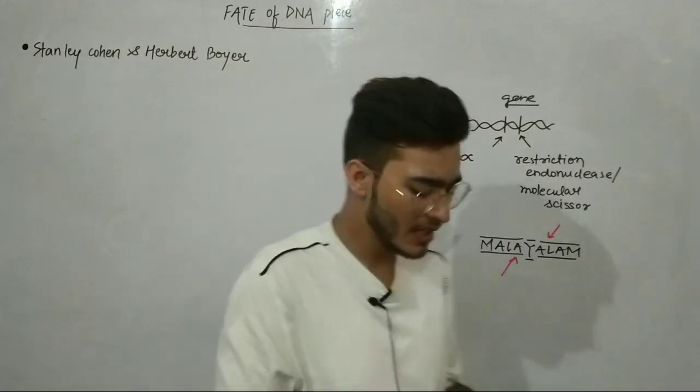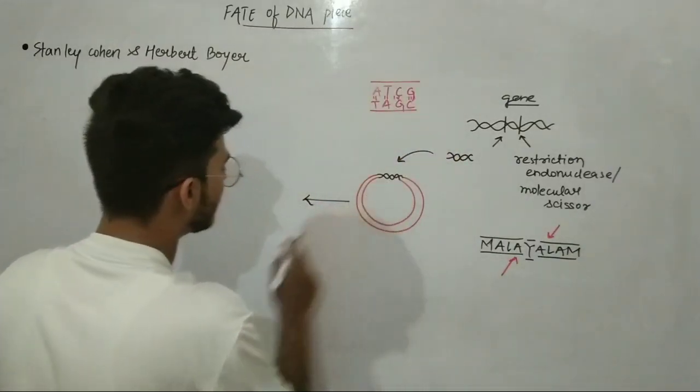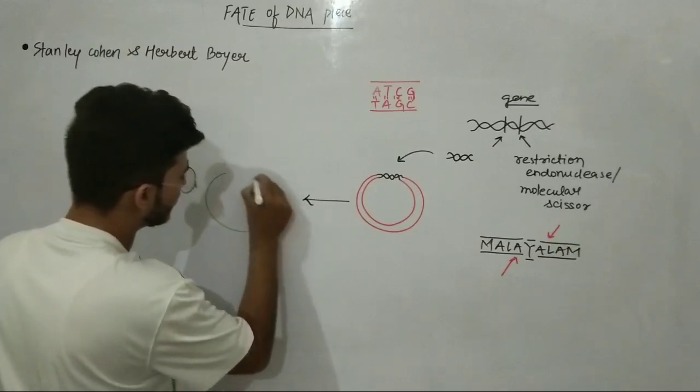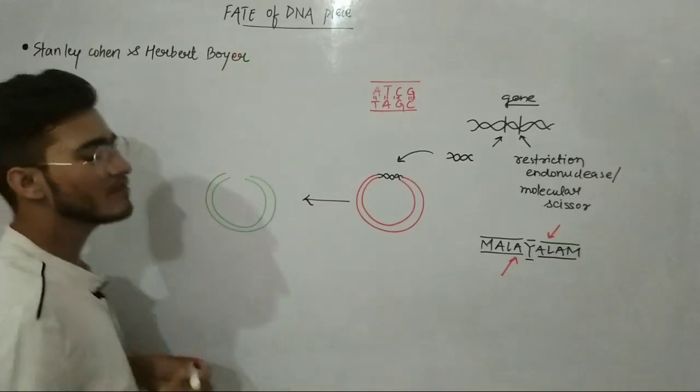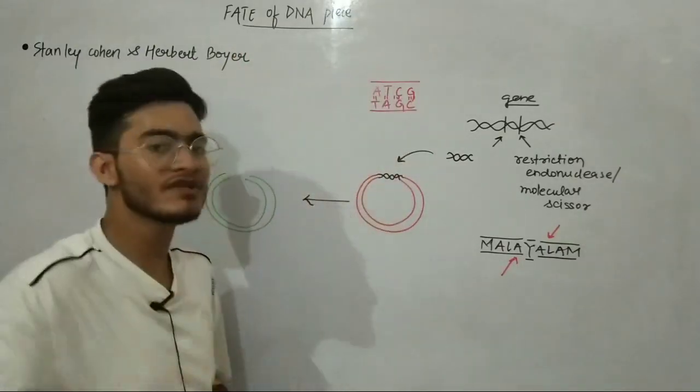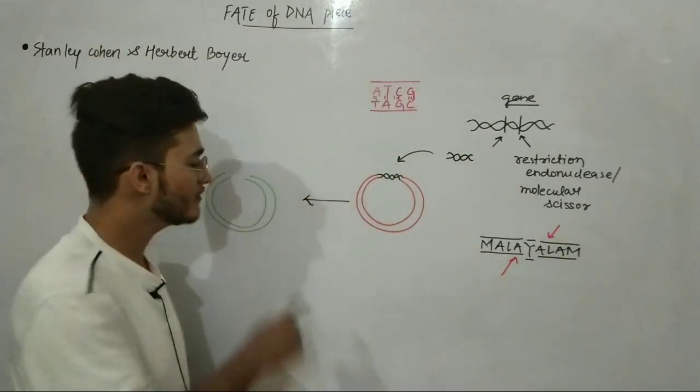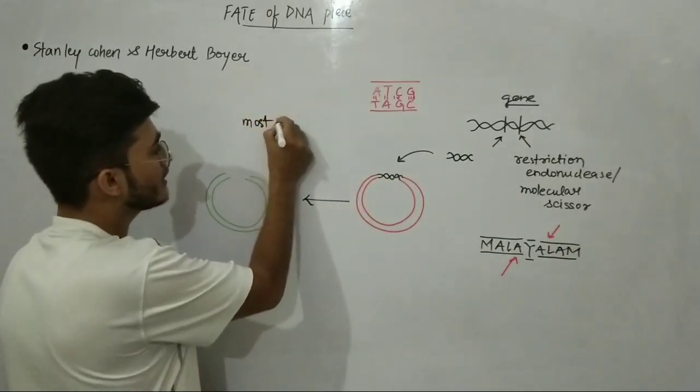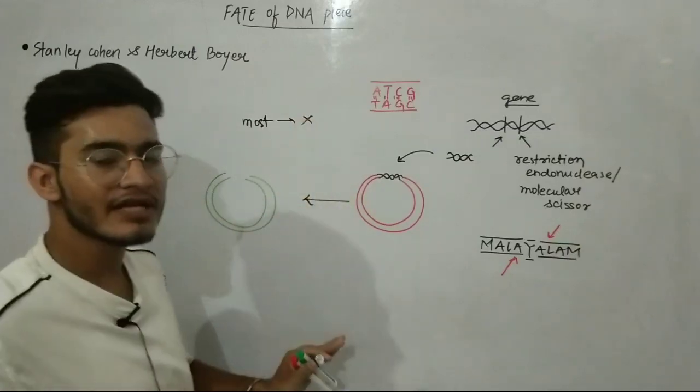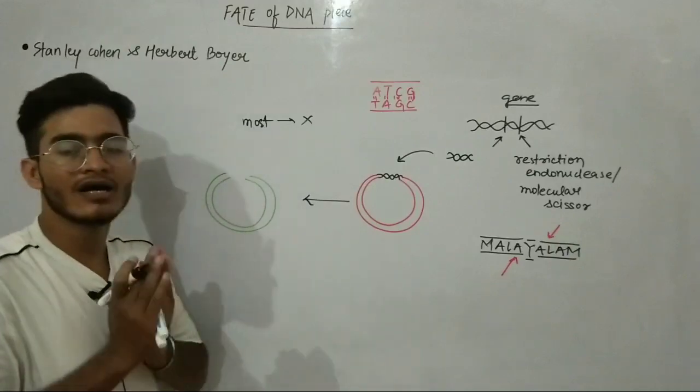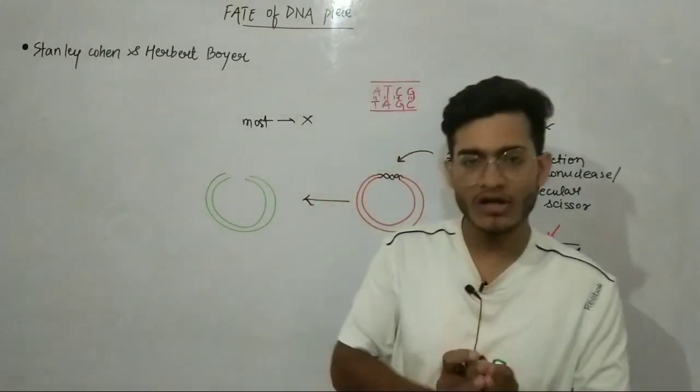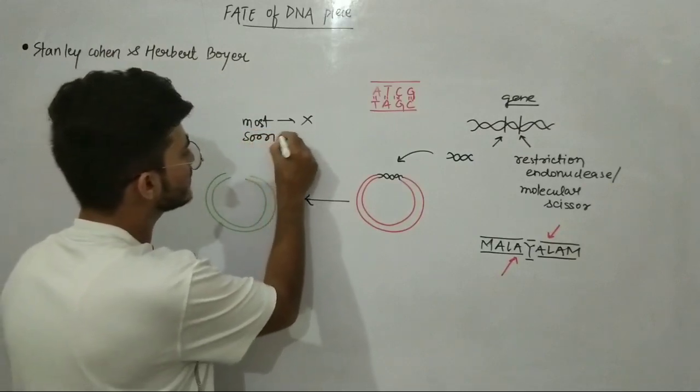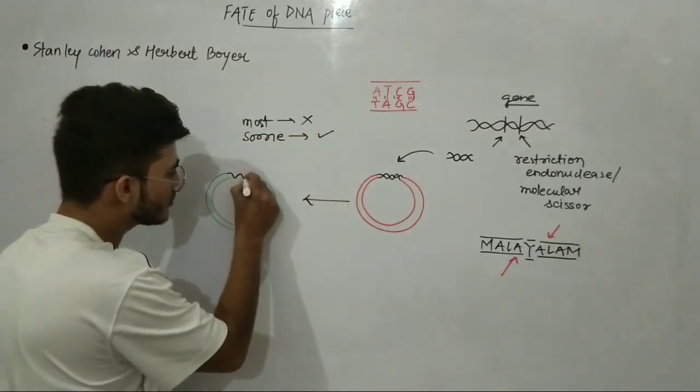Now this is the plasmid which behaves as a carrier and vehicle. You will take it to host cell with this gene of interest. In the host cell, this is the genetic material of host. Now fate means what is the future of this gene fragment, whether it is going to integrate with this host genome or not. In most of the chances it is not going to integrate. It doesn't replicate because it is not part of the host genome.